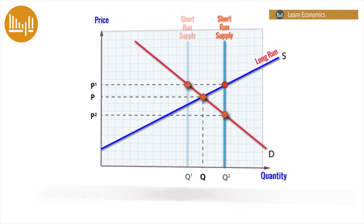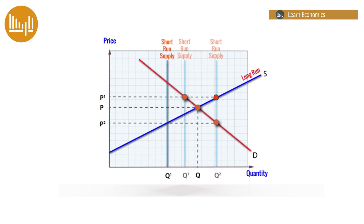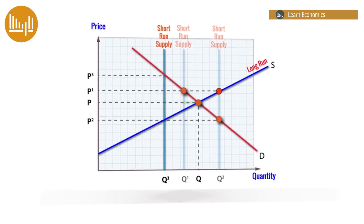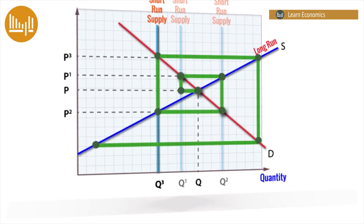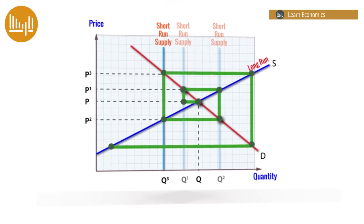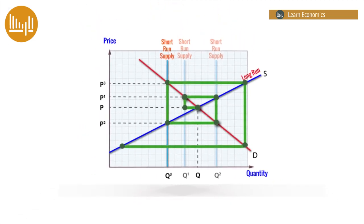At this lower price, growers switch output to another crop and reduce the quantity produced in year 3; however, this has the effect of increasing price to P3. If we follow the price path in green, it resembles a spider's web — hence the name, cobweb diagram. If the process continues, farmers and growers will eventually leave the market, which threatens food supplies and increases food insecurity for the country.